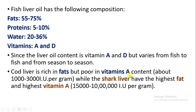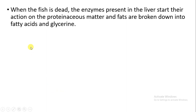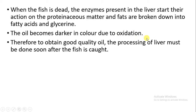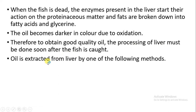Cod liver oil has high content of fat but poor content of vitamin A, while shark liver has high content of fat and the highest amount of vitamin A. When a fish dies, enzymes present inside and outside the fish start reactions in the liver. Proteinaceous matter and fat start to break down, producing fatty acids and glycerine. The oil converts into a darker color due to oxidation. To obtain good quality oil, removal of the oil should be done as soon as possible after the fish is caught.